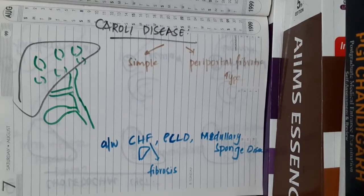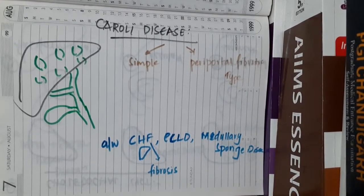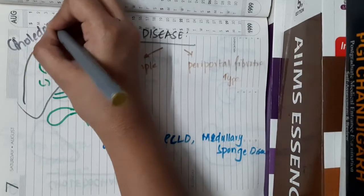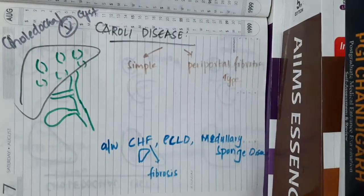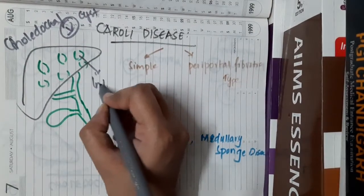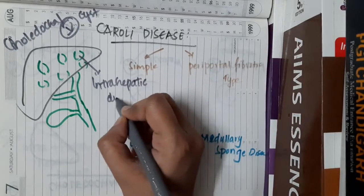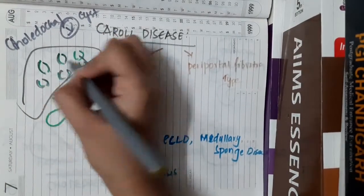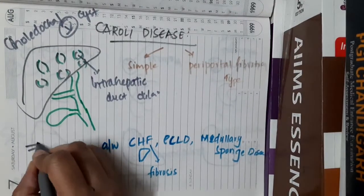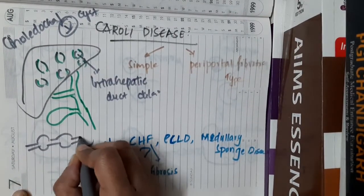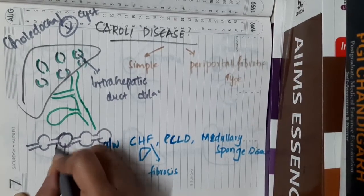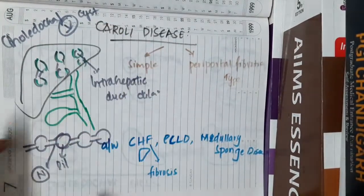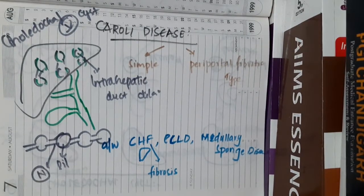Hello friends, let us now learn some important points about Caroli's disease. Caroli's disease is a type of choledochal cyst — it is actually type 5 of choledochal cyst. Here mainly there are intrahepatic dilatations; the intrahepatic ducts undergo dilatation. In this disease we see multiple irregular saccular dilatations, and these dilatations are separated by normal segments. These are the dilatations and these are the normal segments seen intrahepatic, in the liver.